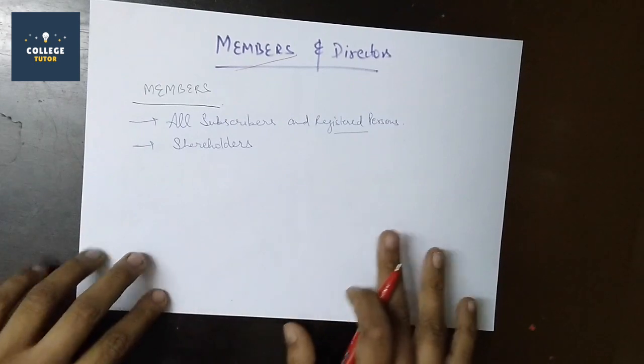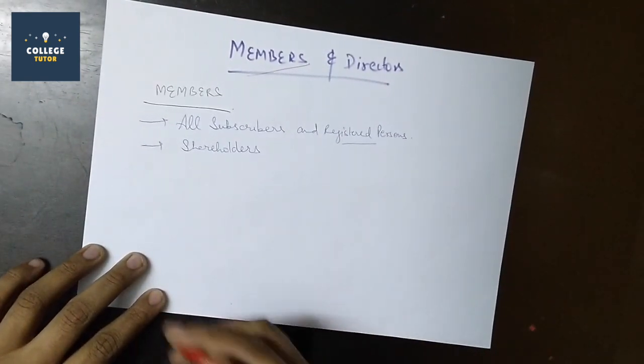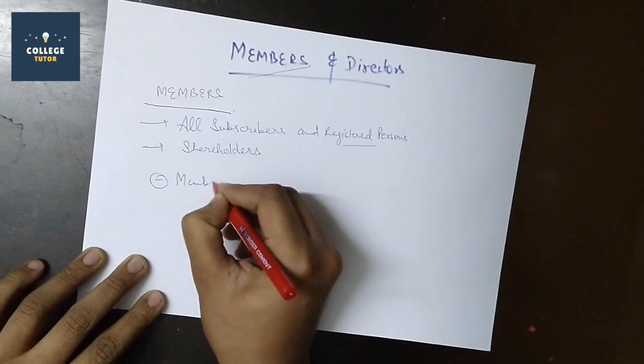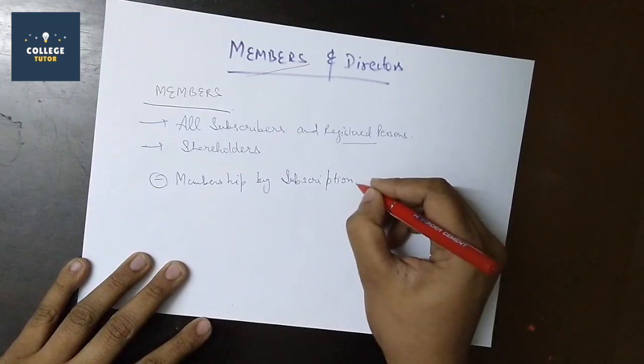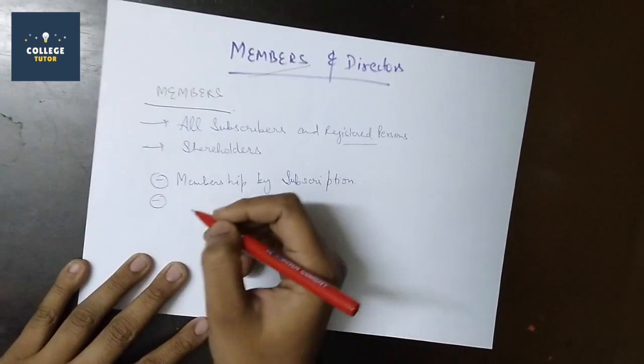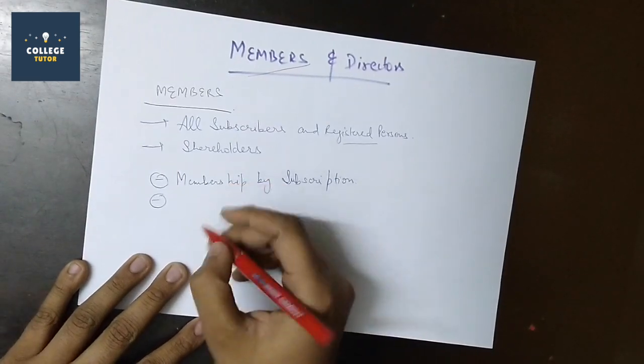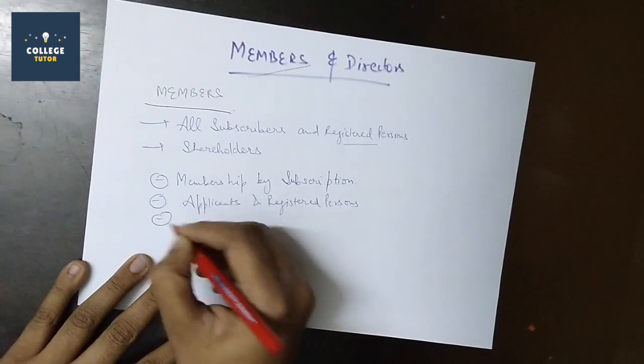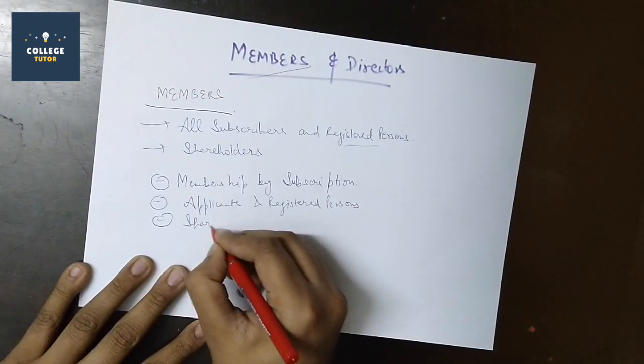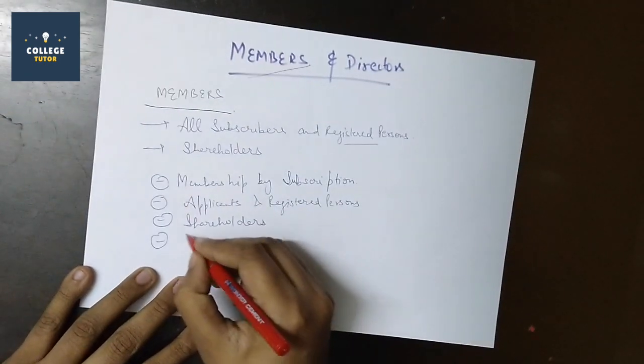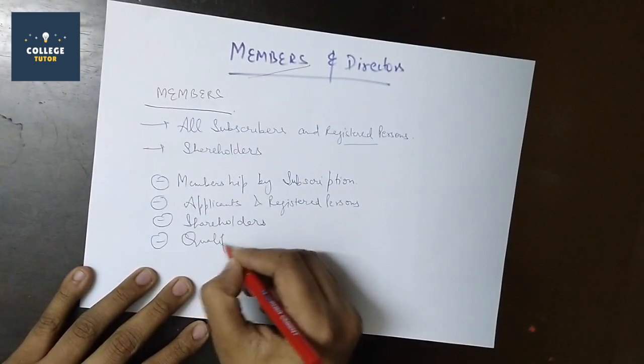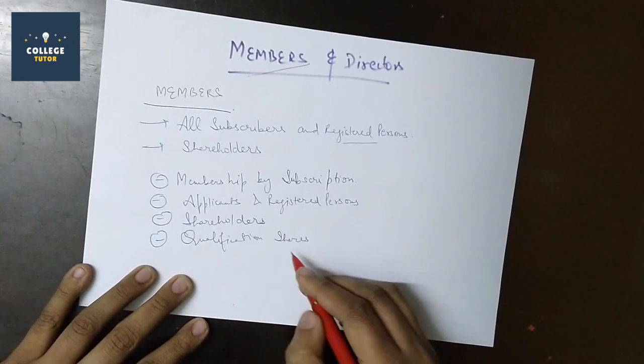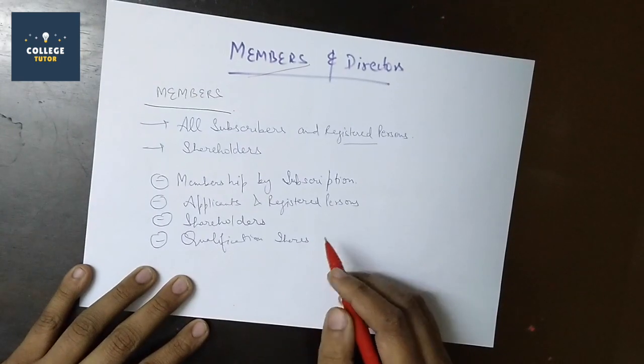Members will have different types of membership. First of all, membership by subscription which is self-explanatory. Second, application or registered members. Third, shareholders - if I have a share of any company then I have qualification shares. Directors need a certain amount of qualification shares required by the company.